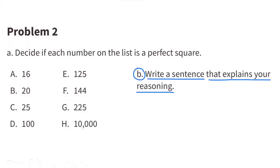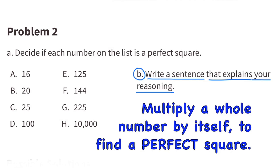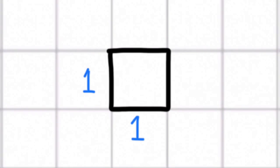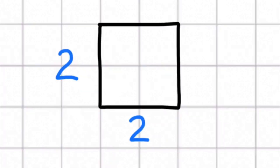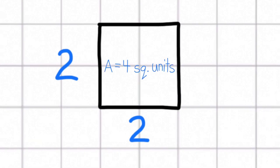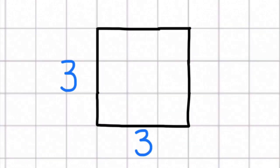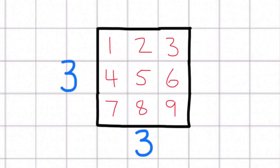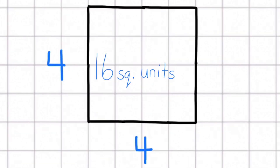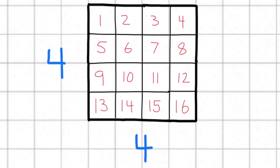Part B: Write a sentence that explains your reasoning. Multiply a whole number by itself to find a perfect square. Here are a few examples of perfect squares: 1 times 1 equals 1, so that's a perfect square. 2 times 2 equals 4, so 4 is a perfect square. 3 times 3 equals 9, so 9 is a perfect square. 4 times 4 equals 16, so 16 is a perfect square.